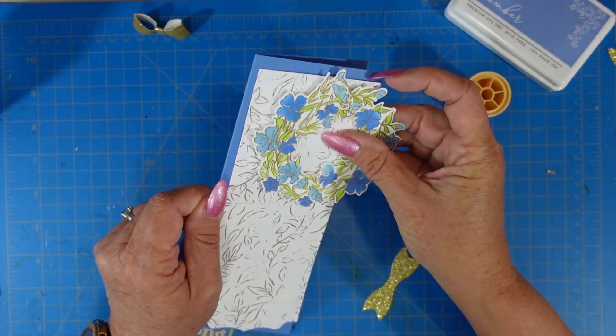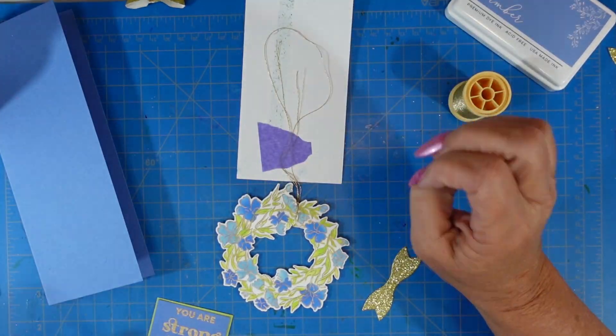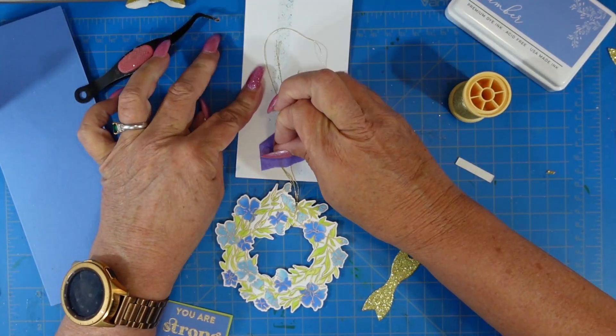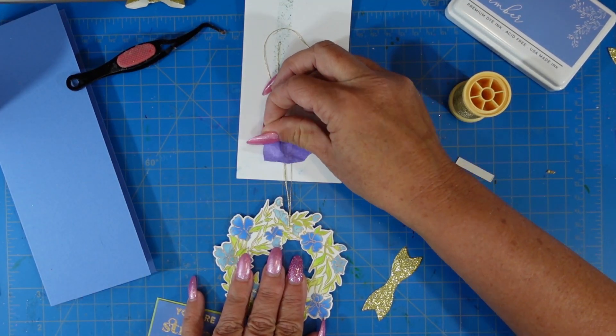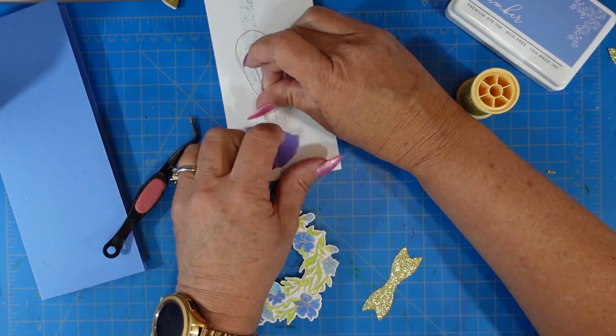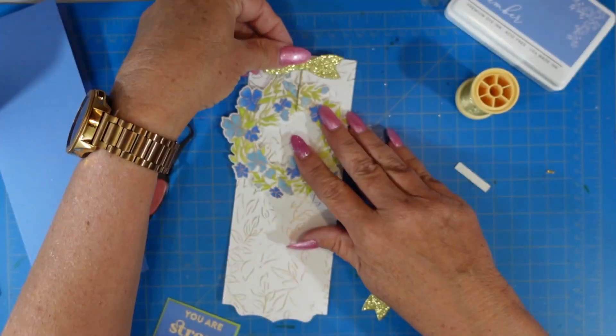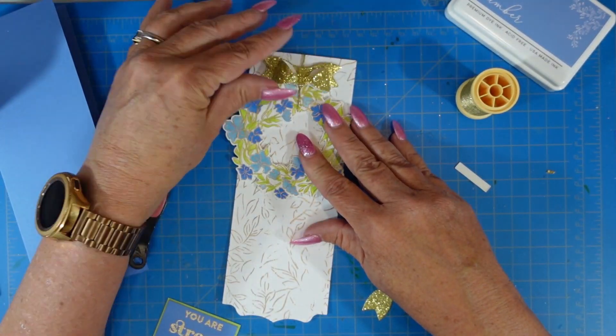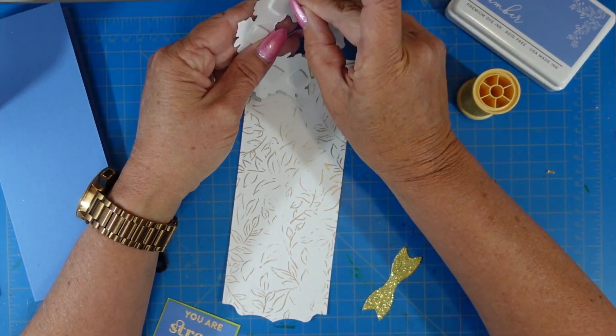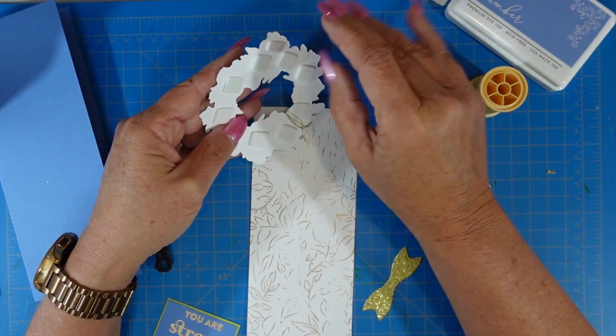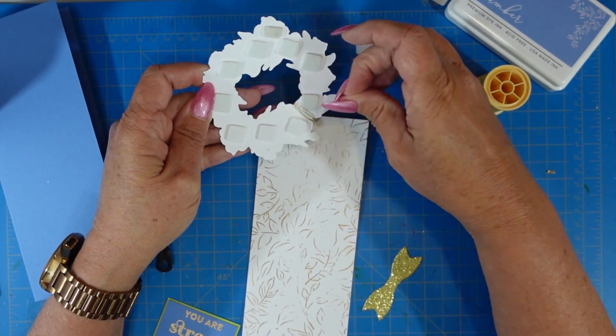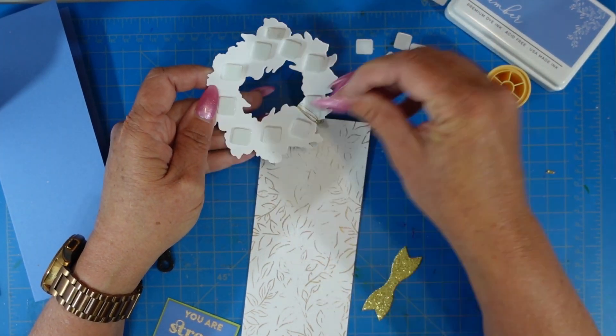Once I get it adjusted where I want it to go, then we're going to start gluing everything down. I'll remove the release paper from the back of my wreath. I will make sure that it's straight. The first time I don't get it straight, so I will lift it up a little bit and straighten it out. Then I will add some very small foam squares to the back of the sentiment as well so that that sentiment is popped up too.